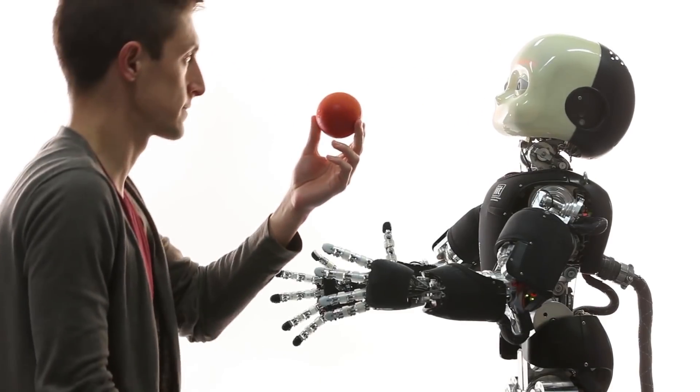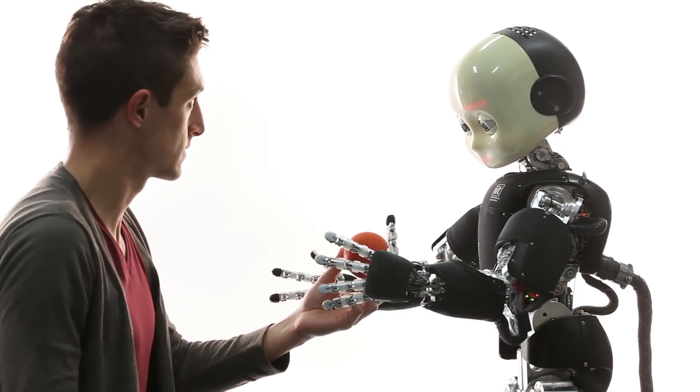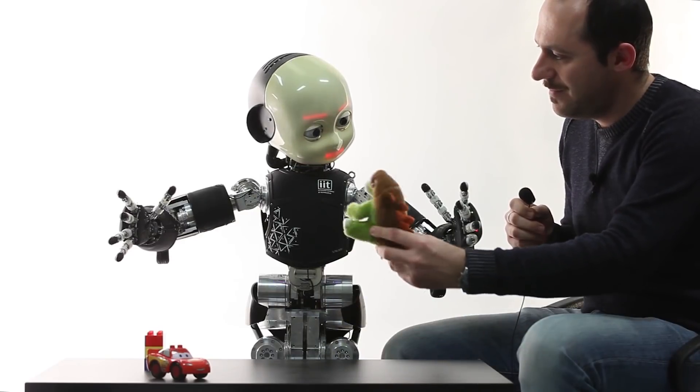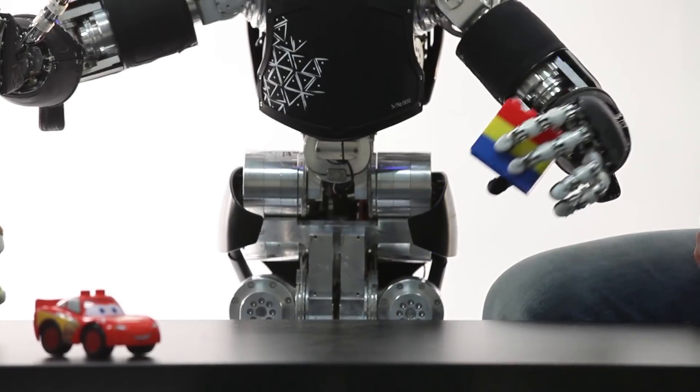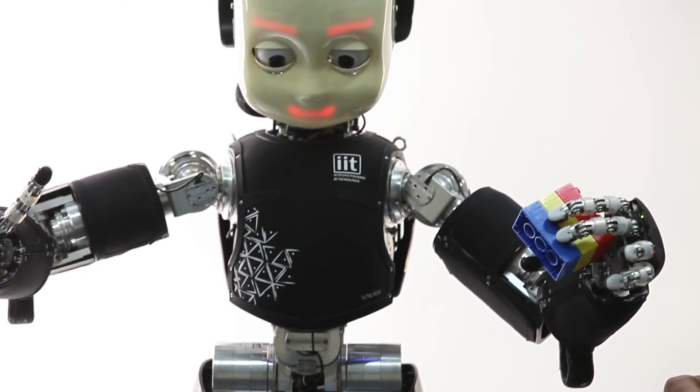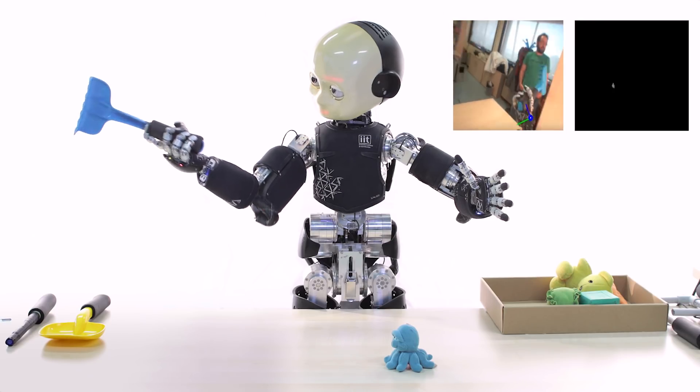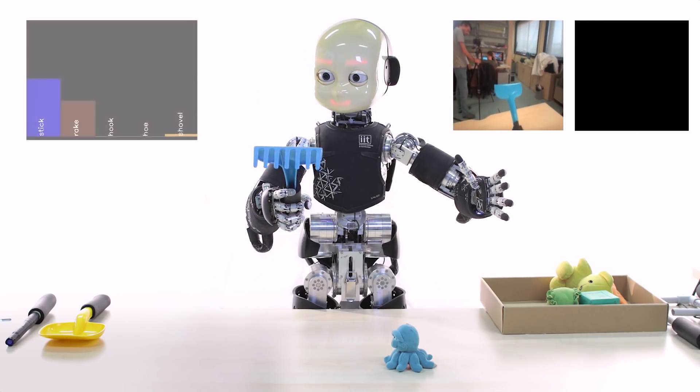iCub has been trained to observe and respond to its surroundings. By watching humans, the robot has learned to grasp and manipulate objects. Some of the project researchers have even taught it to identify the objects it picks up.